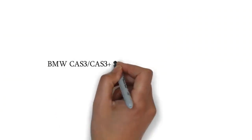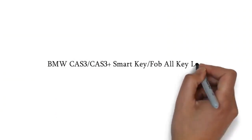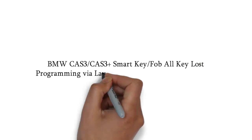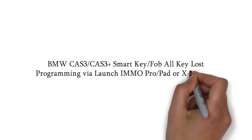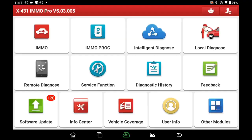BMW CAS 3 and CAS 3 Plus, Smart Key or FOB, All Key Lost Programming with ViLaunch IMO Pro or IMO Pad and X-PROG3. Today I will introduce you to how to program the key of BMW by launch tools.